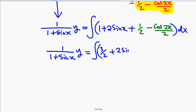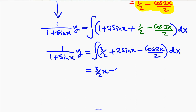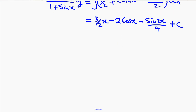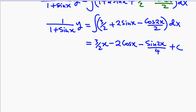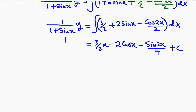Integrating that gives 3 over 2 times x minus 2 cos x minus sin 2x over 4 plus c. So the general solution is 1 over 1 plus sin x times y equals 3 over 2 x minus 2 cos x minus sin 2x over 4 plus c.